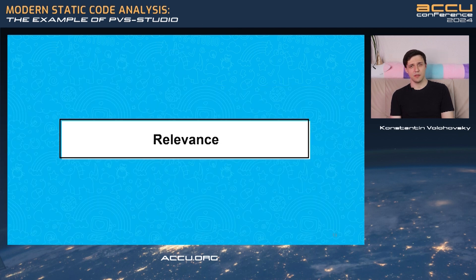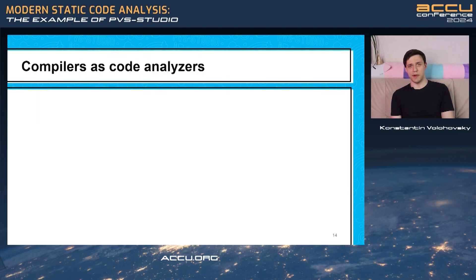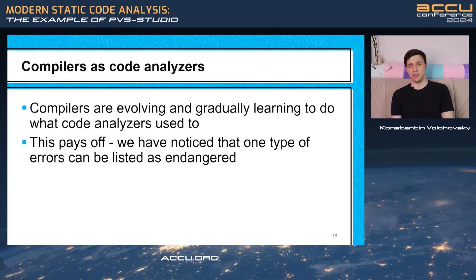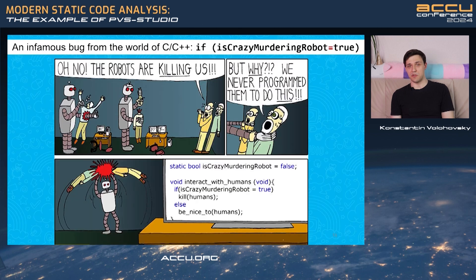You might have a question. Is this relevant compared to compilers? Because it's true, compilers are getting better lately. They even learn to find errors that only Analyzer used to find. And actually, this pays off. Now some errors become very rare.